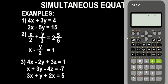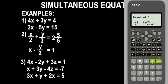The very first thing we have to do is reset it to put it in the default mode. To reset, press the Shift button, then press 3, press OK, and press OK again. Now it's in default mode. The next thing we are going to do is put it in equation mode.